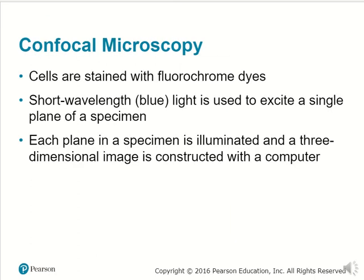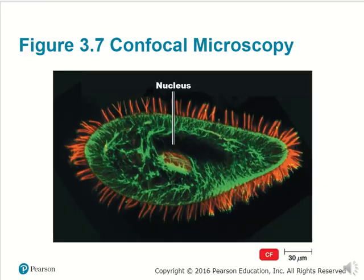Confocal microscopy: cells are stained with fluorescent dyes to assist in contrast and in interpreting different structures of those cells. It uses high energy light from the shorter wavelength region — blue light — to excite a single plane or region of a specimen. Each plane of that specimen is illuminated, and then those planes are compiled to get a three-dimensional image, usually with the aid of a computer. In this case, we're observing the nucleus of a cell.